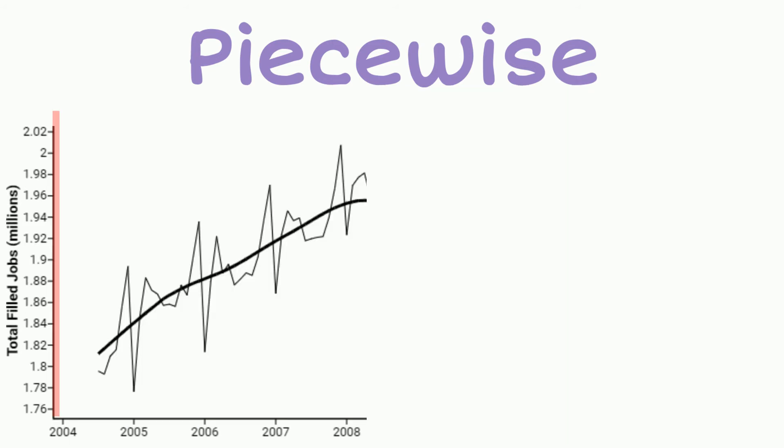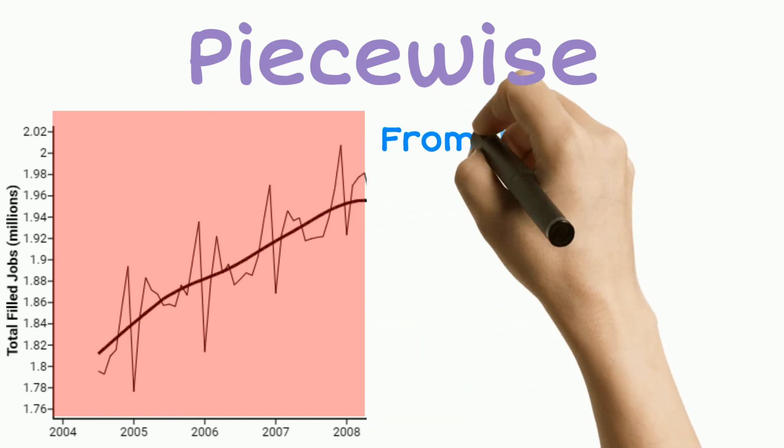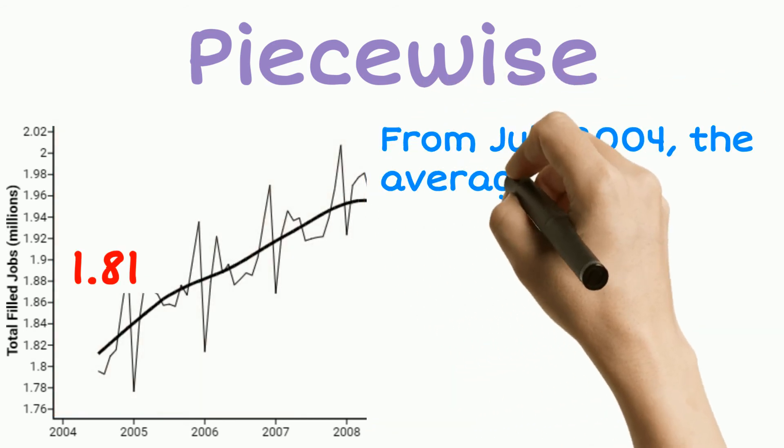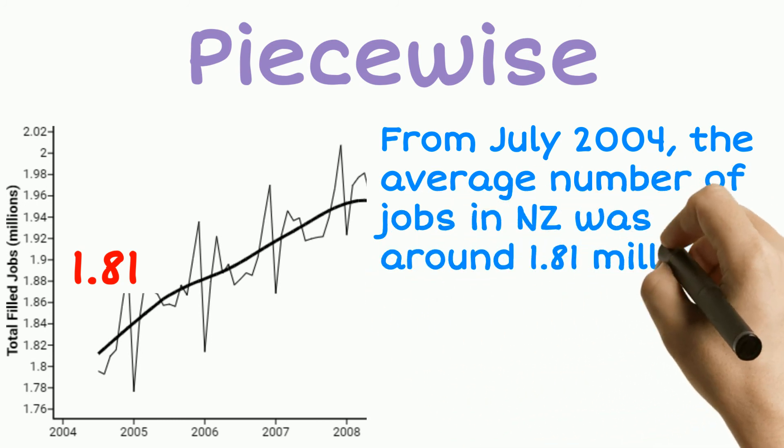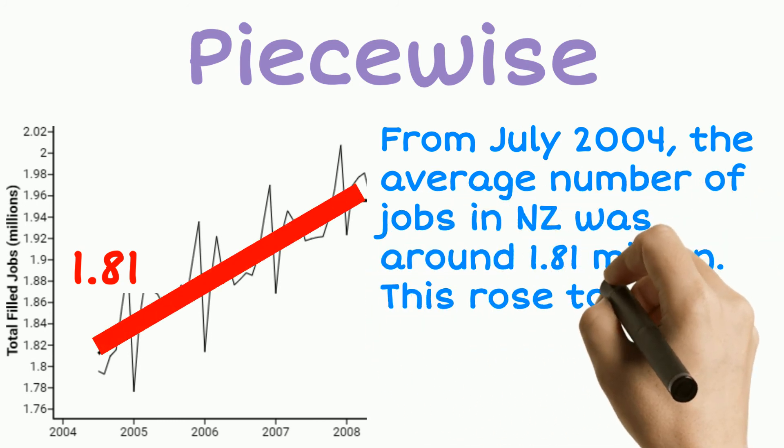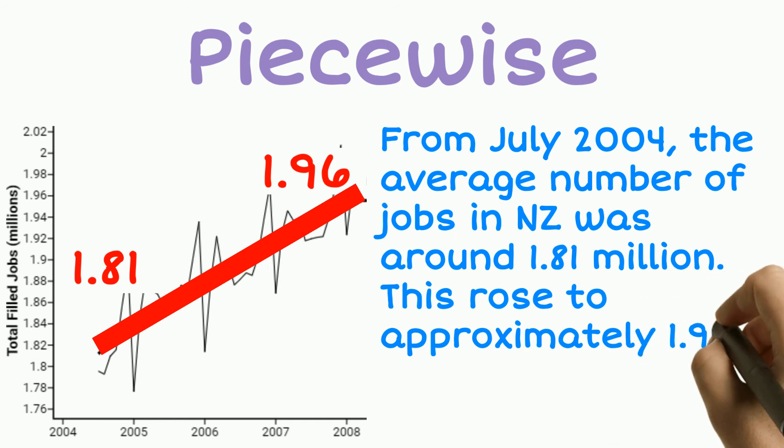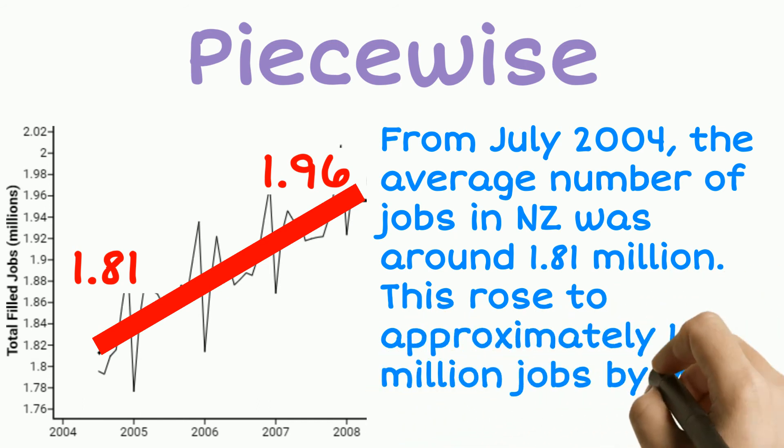So in section one, we can say from July 2004, the average number of people employed in New Zealand was around 1.81 million. And this rose to approximately 1.96 million people employed by May 2008.